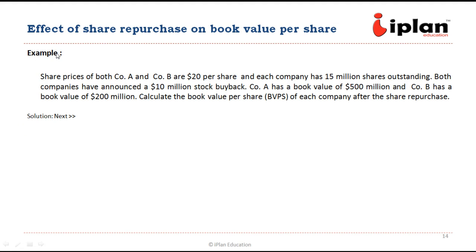Now let us look at the effect of share repurchase on book value per share. Let us take an example. Share price of both Company A and Company B is given to be $20 per share. Shares outstanding are 15 million. Both are planning to have a $10 million stock buyback. The book values are different: $500 million for Company A and $200 million for Company B.